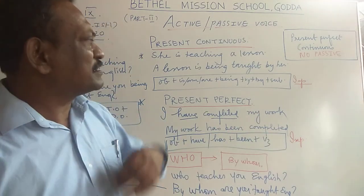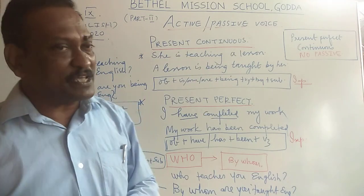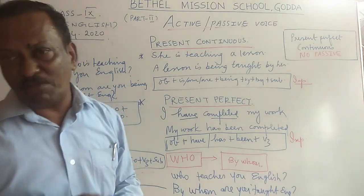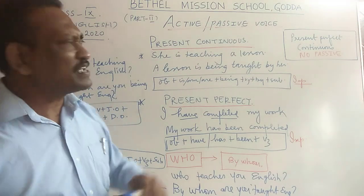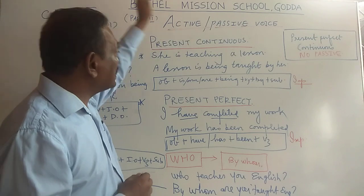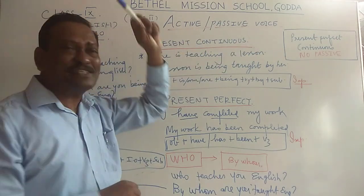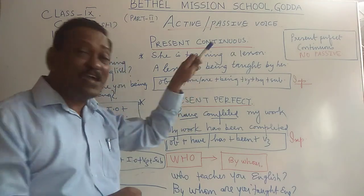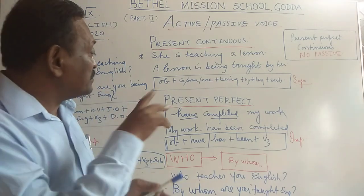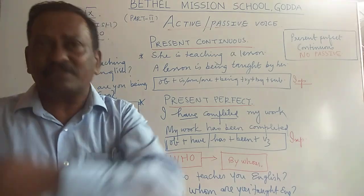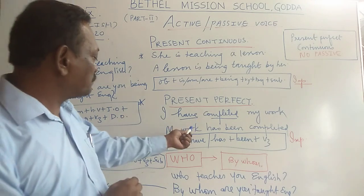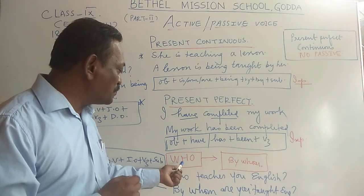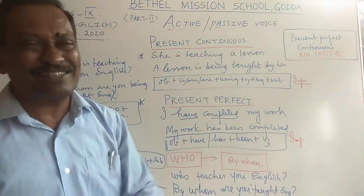Active and passive is actually a vast chapter. There are lots of exercises to be done and many exceptions. Today, this much is enough. At home, take your grammar book and go through the exercises related to active and passive. Find out how a present continuous tense in the active voice is changed to passive, how a present perfect in active voice is changed to passive, and find sentences that start with a WH question word and try to change them.